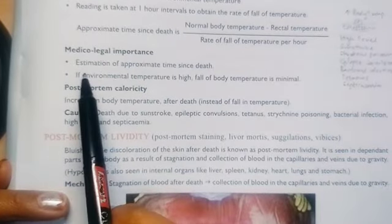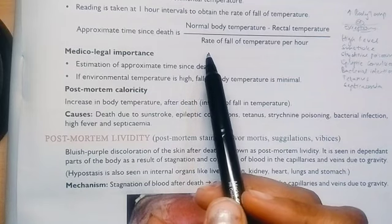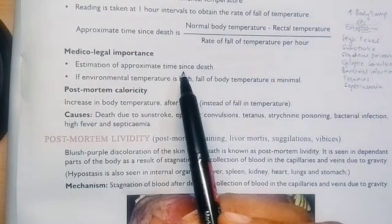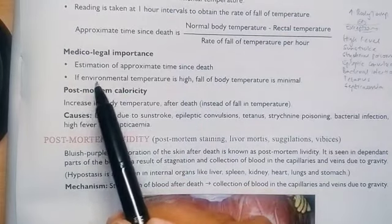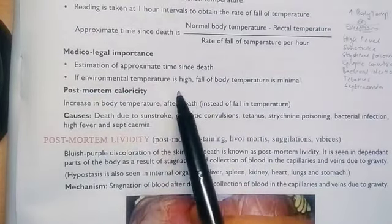Estimation of approximate time since death - based on the cooling of the body, you can estimate when the person has died and in what place he had died. If the environmental temperature is high, fall of body temperature is minimal. If the environment temperature is less, then the fall of body temperature is high.